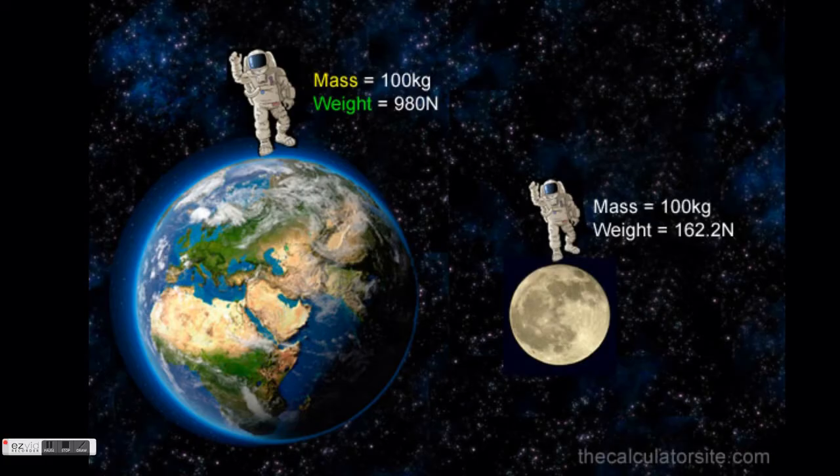The only way to change the mass of an object is by removing some of it. In science, we measure mass in grams or kilograms, while we measure weight in a unit called newtons.